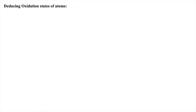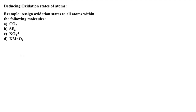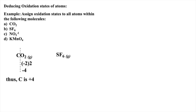Let's apply these rules to assign oxidation states to all atoms within the following molecules. If each oxygen atom is negative two within carbon dioxide, then for the molecule to be neutral, we can mathematically deduce that carbon must have an oxidation state of plus four. In the next example, each fluorine must be negative one. Thus, sulfur must have an oxidation value of plus six for this molecule to be neutral.